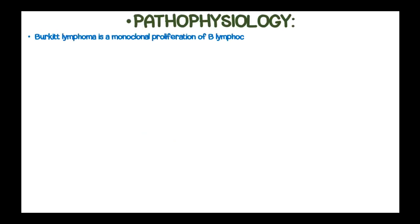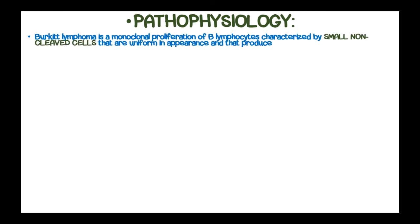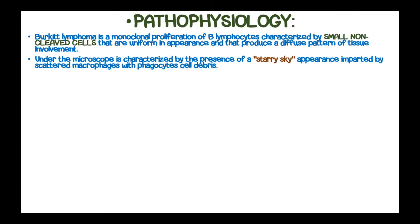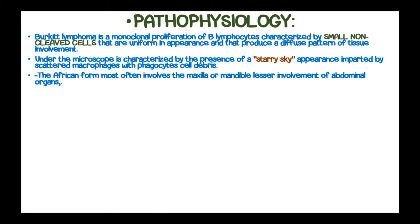Burkitt lymphoma is a monoclonal proliferation of B-lymphocytes characterized by small non-cleaved cells that are uniform in appearance and produce a diffuse pattern of tissue involvement. Under the microscope, it is characterized by the presence of a starry sky appearance, imparted by scattered macrophages with phagocytosed cell debris. The African form most often involves the maxilla and mandible, with lesser involvement of abdominal organs.